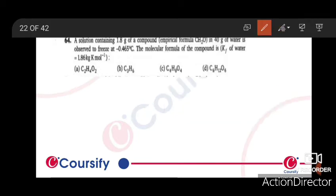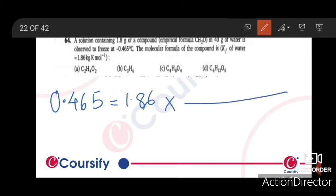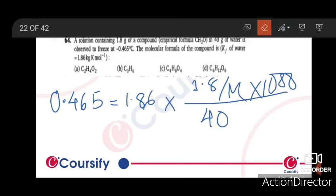Next we know that delta Tf is equal to Kf into m. We will put the values, 0.465 equals 1.86 into m by M, which we do not know. We will put 1.8 by M into 1000 by 40 gram of water.